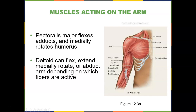Muscles acting on the arm — as a good review: pectoralis major flexes, adducts, and medially rotates the humerus. The deltoid can flex, extend, medially rotate, or abduct the arm depending on which fibers are active.